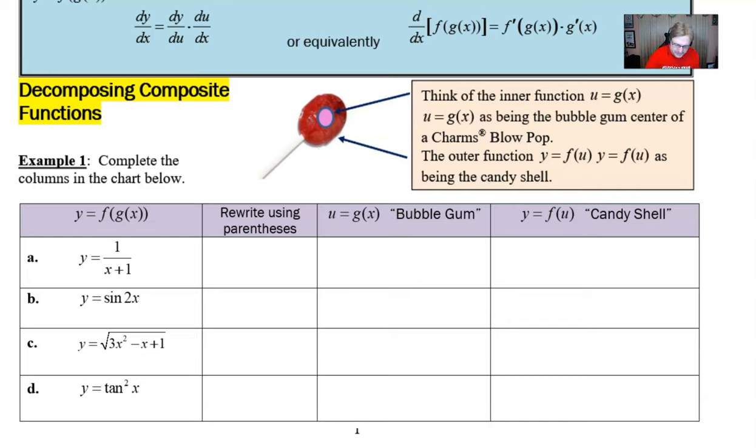So just how do we do that? Good question. So I have in my Example 1 four different composite functions. They're called y = f(g(x)). What our job is to do is to first of all rewrite each one using parentheses so that we can then identify the u or the bubblegum center, and then take the derivative. I'm sorry, identify y, which is the candy shell, and then eventually our hope is going to be to take the derivative after all is said and done.